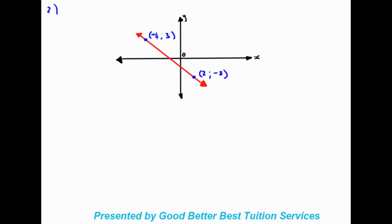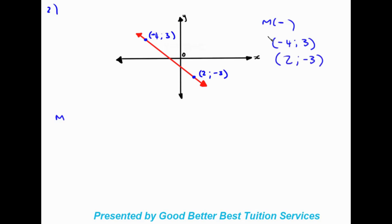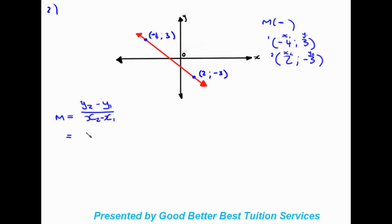Here we have example two. Straight away we can see the gradient is going to be negative because the line is heading in the other direction. So the first thing we do is work out our gradient. The points given are negative four and three, and two and negative three. We'll call the first one bracket one — x1, y1 — and the second one bracket two — x2, y2.